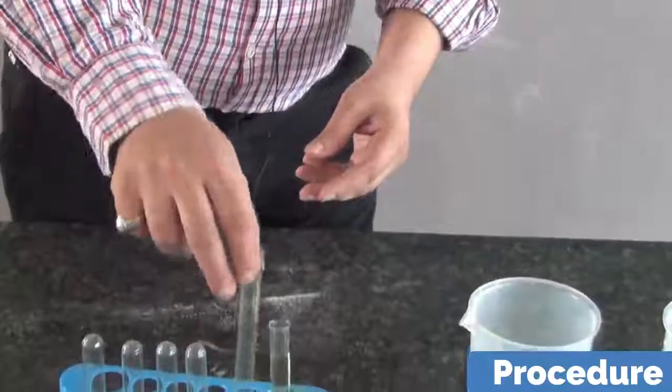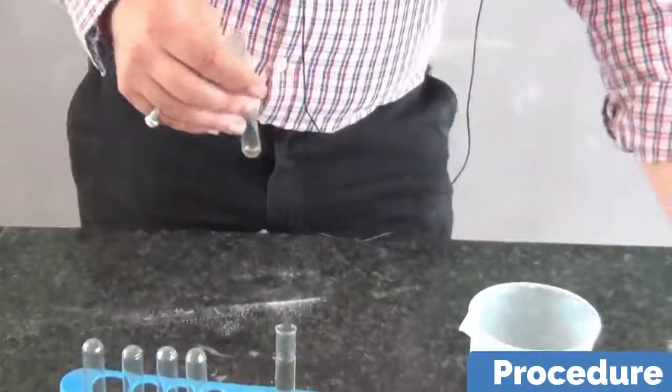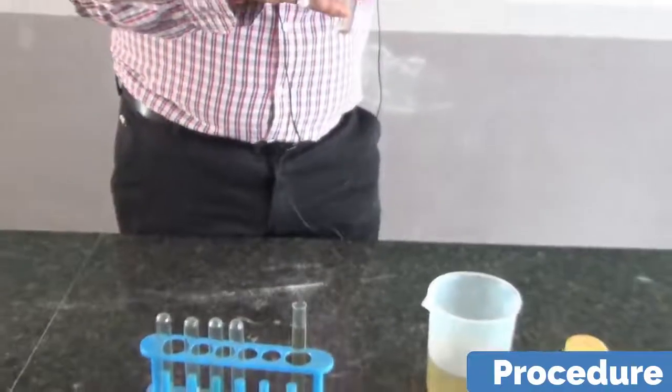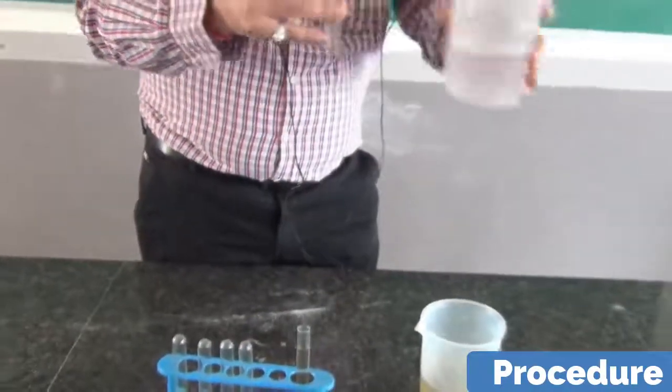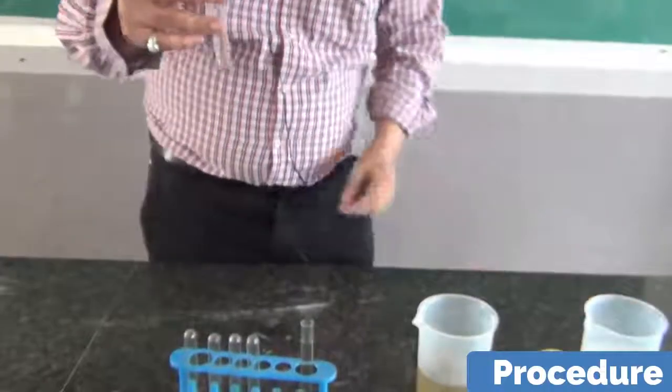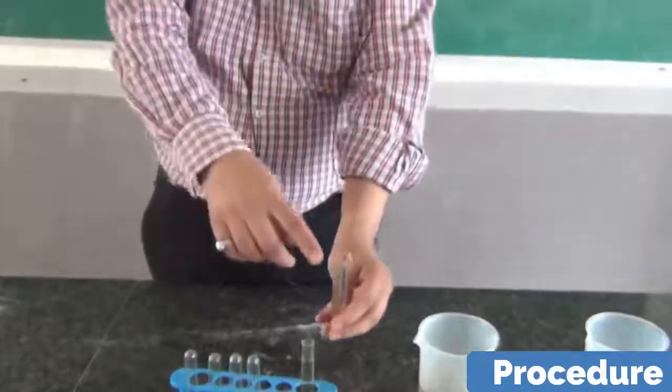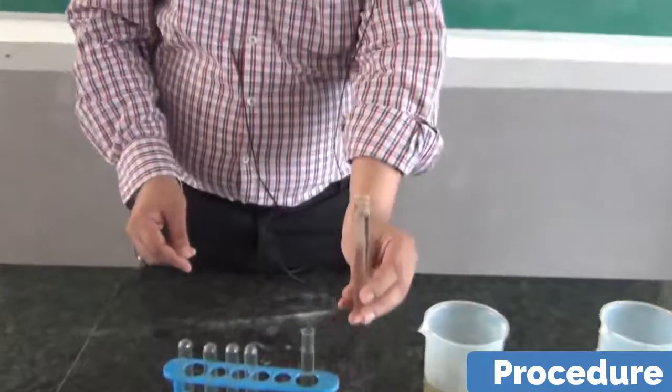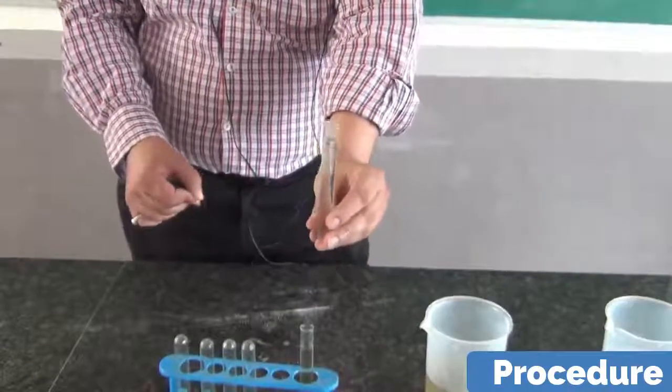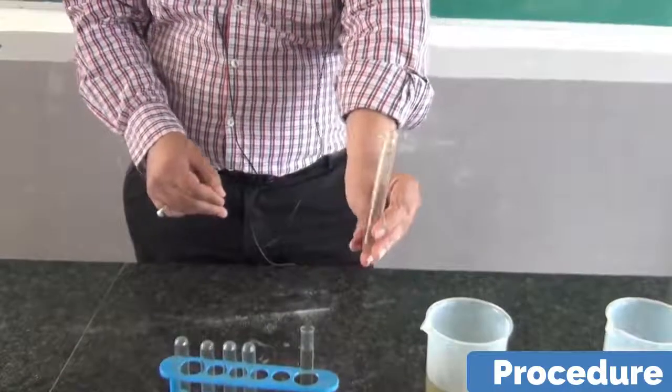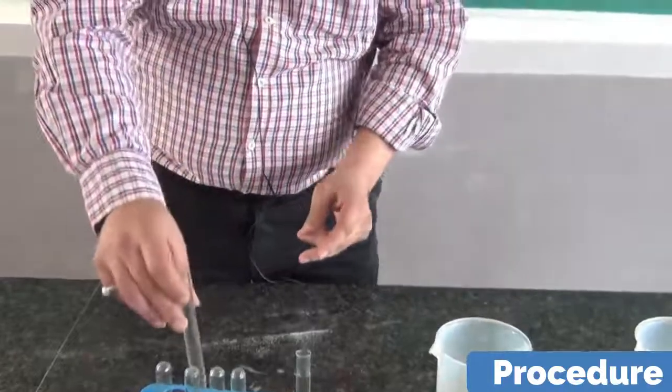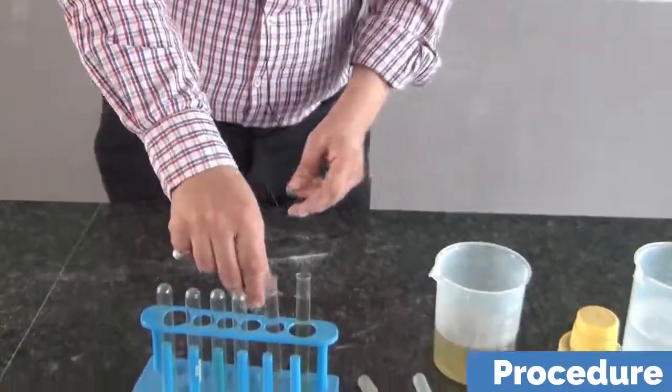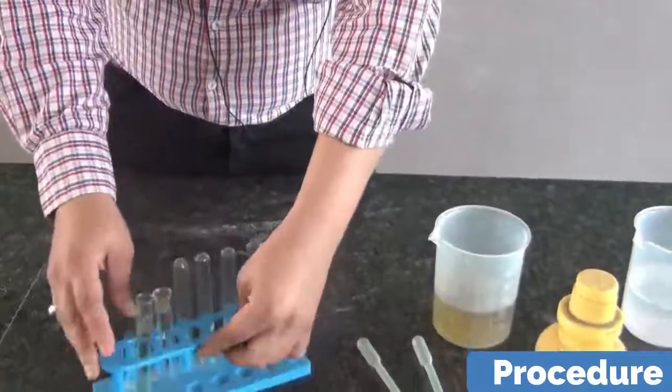Then we are going to test another water sample brought from industrial area. You see another water sample. You can see some air bubbles here. This water sample has been brought from the industrial area, from the waste water of the industry. I am keeping this at the other side of the rack.